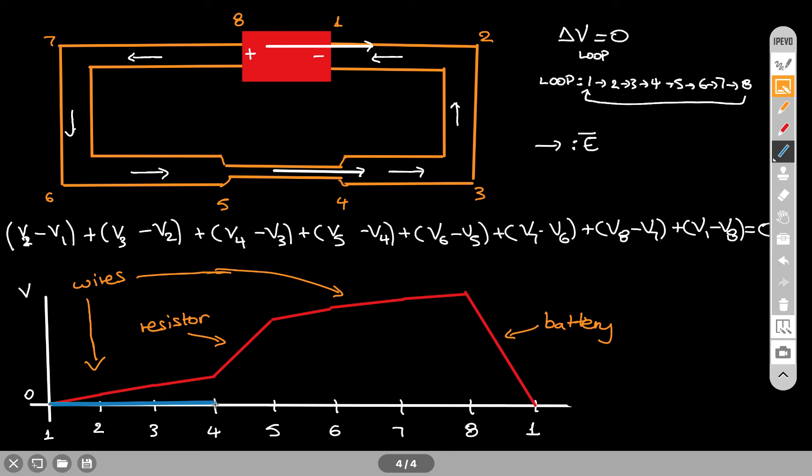When you move across the resistor, you get this large increase in the potential. Now from points five to six, seven, and eight, it's again wires. In theory, I'm going to assume these are ideal wires, which means the potential does not change, so the slope here is exactly zero. Then I have the battery—I need to go back to the same point I was at the beginning.